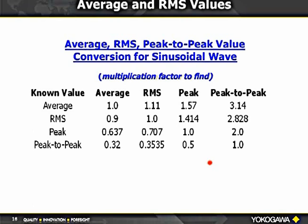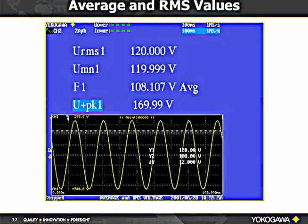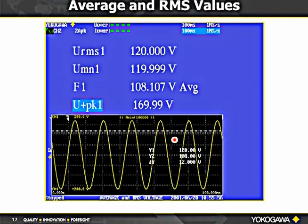Here's a screen from the power analyzer set up on a calibrator. We're reading 120 volts RMS (U RMS1) on element number one. U mean is the mean value scaled to RMS — equivalent to what a moving-coil meter would read. The peak value is 169.99, approximately 170 volts. Looking at the sine wave waveform, the RMS value shows at 120 with the top cursor and the half-cycle average mean at 108, showing their relationship on the waveform.